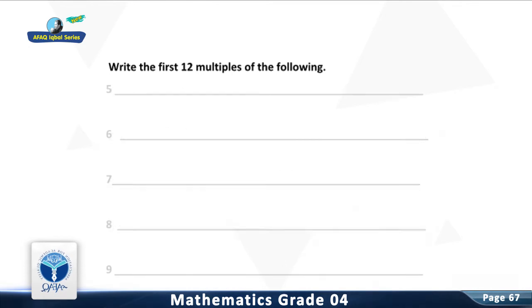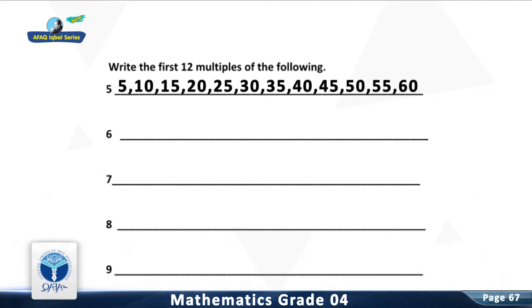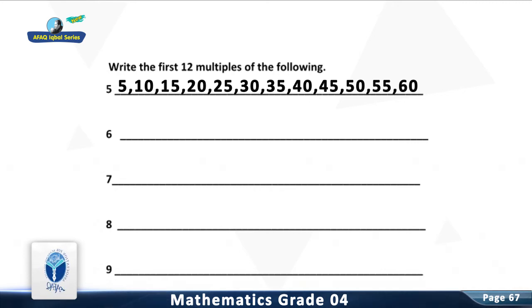Question 4/5: Write the first 12 multiples. The multiples are 3, 6, 9, 12, 15, 20, 25, 30, 35, 40, 45, 50, 55, and 60.